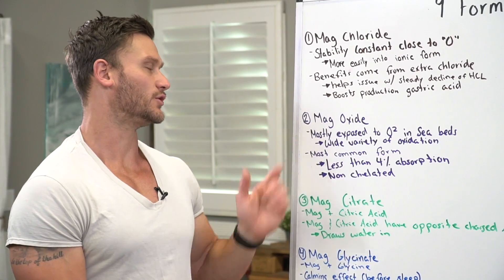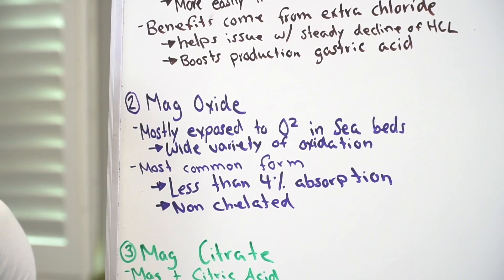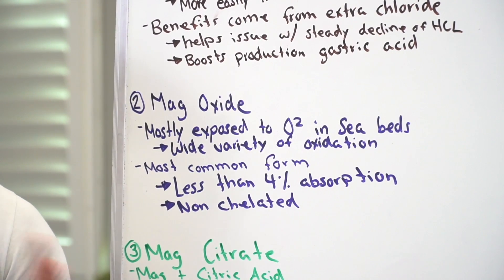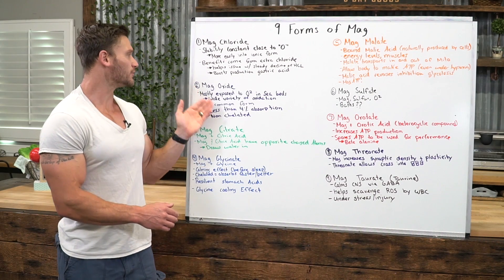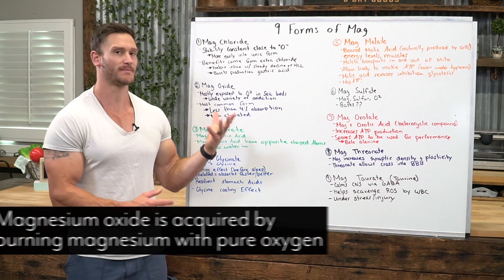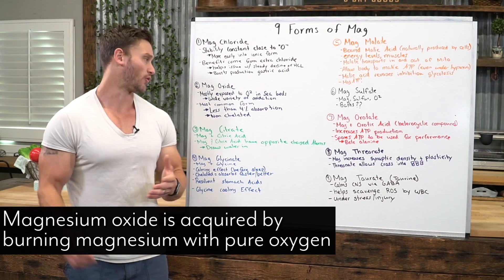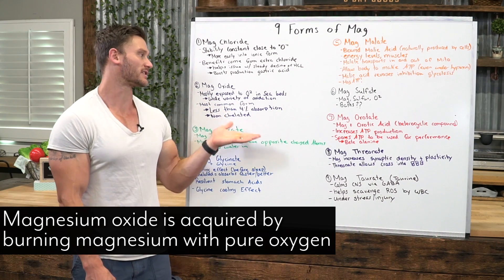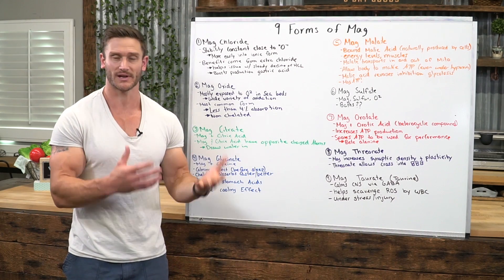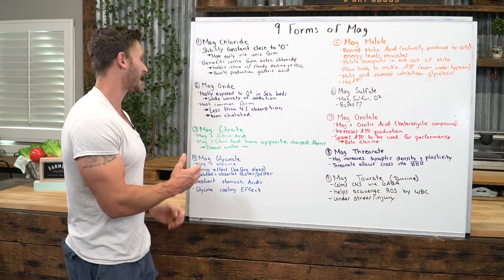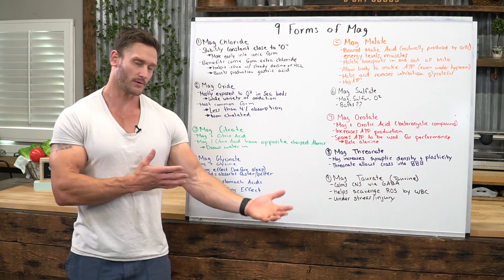Number two is magnesium oxide. This is probably the most common one you're going to see when you go to the grocery store — the most common basic one. Magnesium oxide becomes magnesium oxide by being combined with oxygen in its natural form. For example, it's mostly exposed to oxygen in seabeds, where they take salt, sodium, and minerals that are sitting in a seabed being exposed to oxygen.